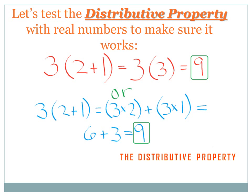Does that make sense to you? Well, let's try it with some real numbers. Let's say we've got the expression 3 times (2 plus 1). We know in simple math that I can add the 2 plus 1 and it becomes 3. So I could change this to 3 times 3, which is the same thing as 2 plus 1. And 3 times 3 equals 9.